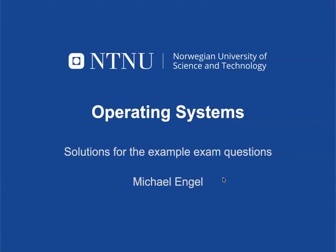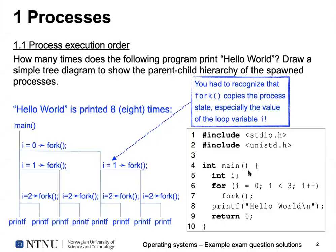Let's dig into our example exam. The first question was about processes — you've all worked with processes and fork in Unix and the practical exercises. The first thing was checking if you understand processes and their execution order. The question was about how many times a given program would print 'hello world', and you should also draw a simple tree diagram to show the parent-child hierarchy of the spawned processes.